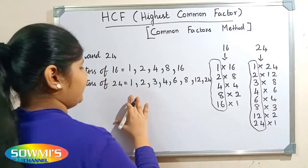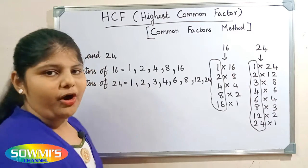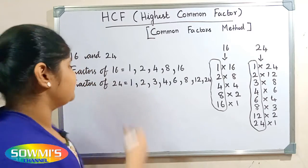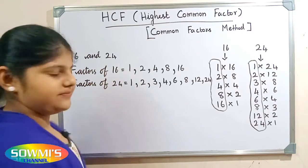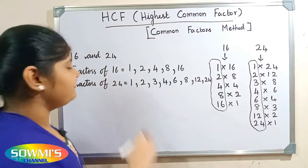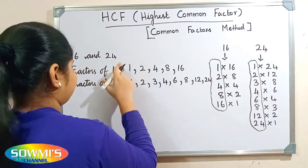Now we have to find the common factors of these two numbers — the common factors of 16 and 24.